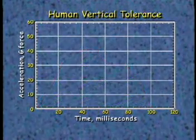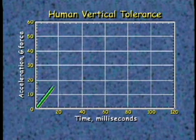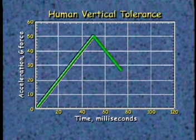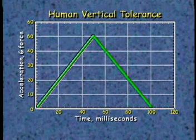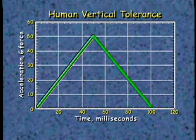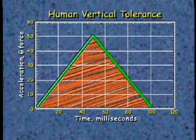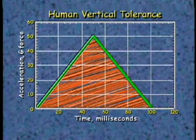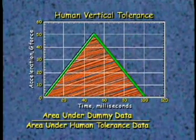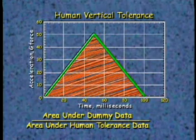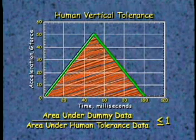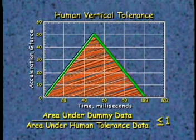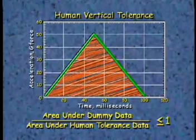This graph shows the maximum energy, or g-force, a human can tolerate over a specific time. The plot goes from 0g to 50g and back to 0g in a very short amount of time. The shaded area within the triangle is the amount of energy a human can tolerate in 100 milliseconds. Next, we set up a ratio. By comparing the shaded area under the dummy data to the shaded area under the human tolerance data, we can determine if the passengers survive. We want this ratio to be less than or equal to 1 if passengers are to survive.